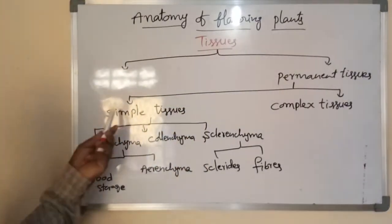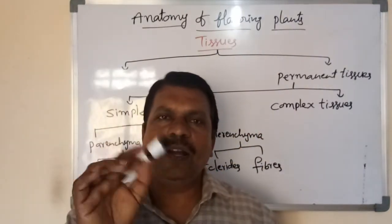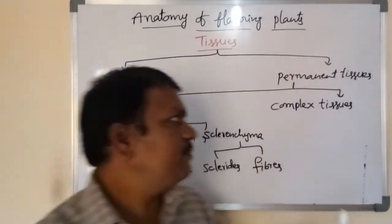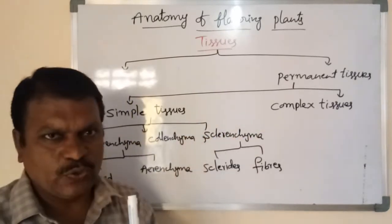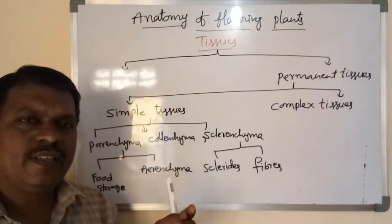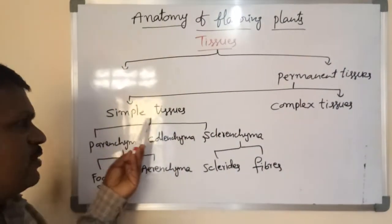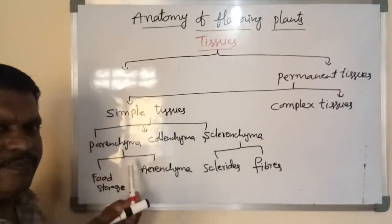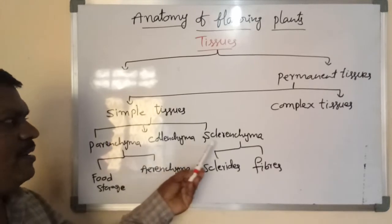Permanent tissues means cells or tissues which lose the ability to divide are called permanent tissues. Then permanent tissues perform their respective functions. Permanent tissues are of two kinds based on their function: simple tissues and complex tissues. Simple tissues are simple in structure and perform simple functions. Simple tissues are of three kinds based on their function, location, structure, and even origin: parenchyma, collenchyma, and sclerenchyma.